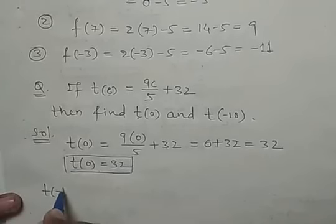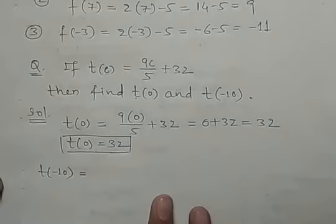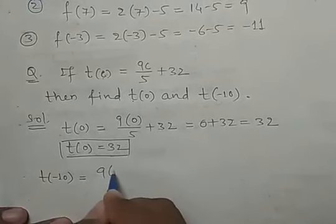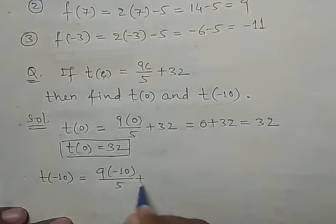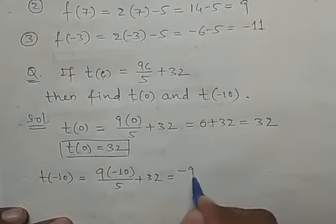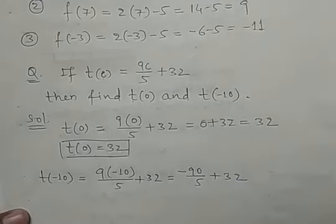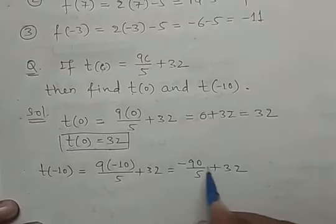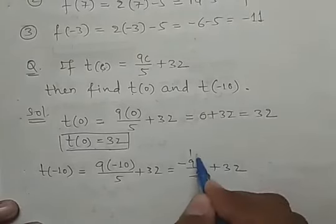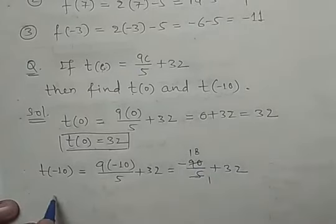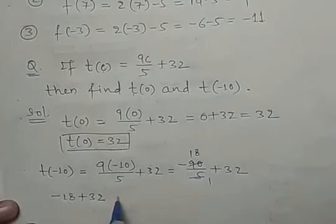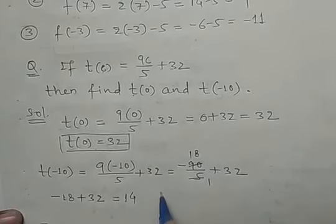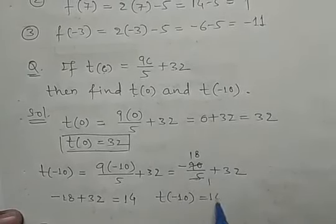And if I put -10 at the place of c, then: 9(-10)/5 + 32 = -90/5 + 32 = -18 + 32 = 14. So t(-10) = 14.